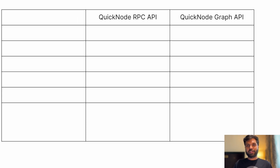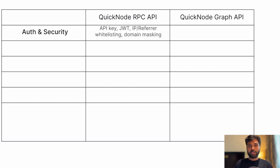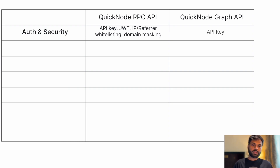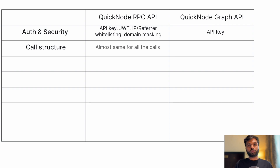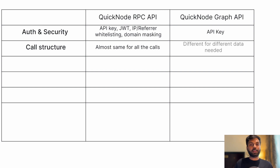Now let's list the differences. The Quicknode RPC API has API key, JWT, IP address and referer whitelisting, and domain masking for security and authentication purposes. The GraphQL API right now just has the API key. With Quicknode's RPC API, the structure of different calls is usually the same — only the parameters change. But with Quicknode's GraphQL API, the structure to get different kinds of data changes and varies.